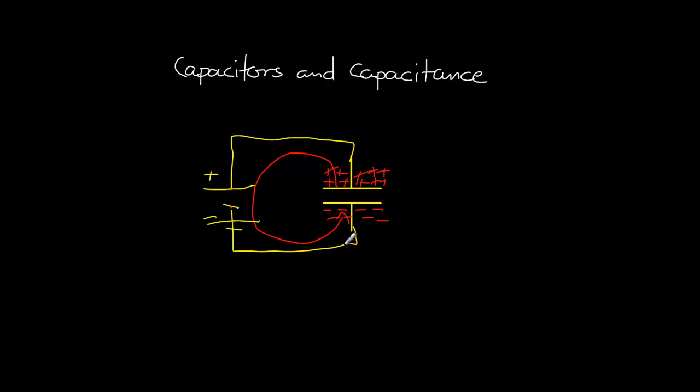Doubling the potential difference will double the amount of charge that's put on the plates, and once again, once the charge has got onto the plates, the current will stop. So if I double the potential difference, I double the amount of charge. What we can see is the charge that's stored on the plates is going to be proportional to the potential difference.